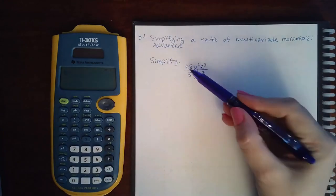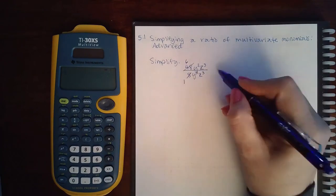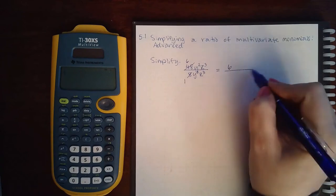So we first reduce the numbers. I can reduce 48 and 8 by 8. So I get 1 and I get 6. So I have 6 in my numerator and 1 in my denominator.